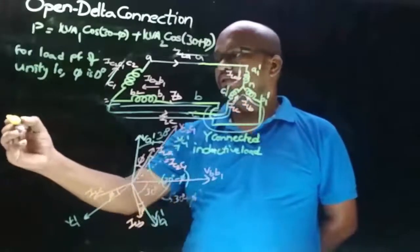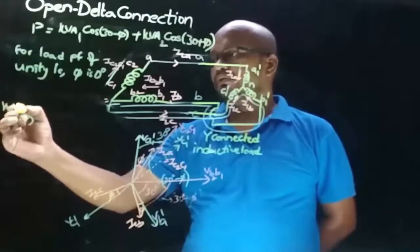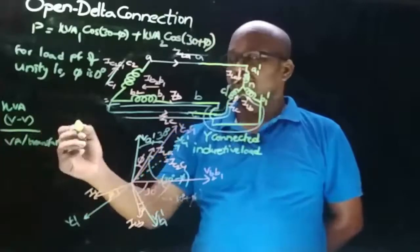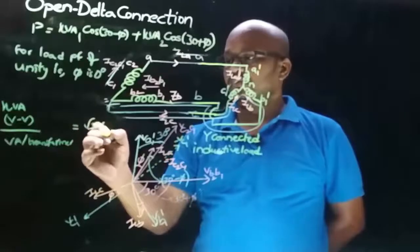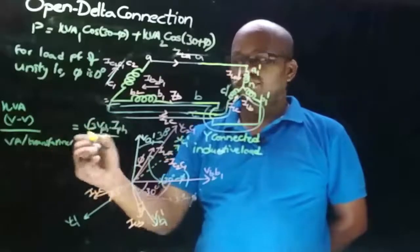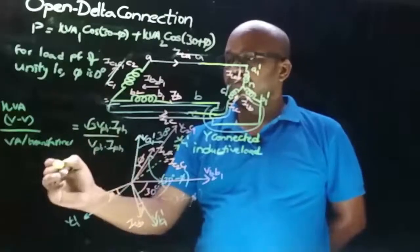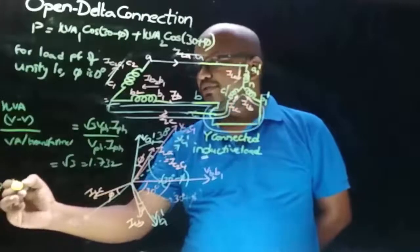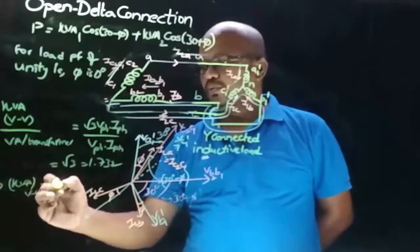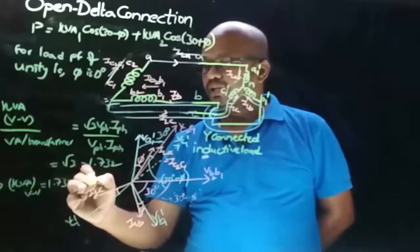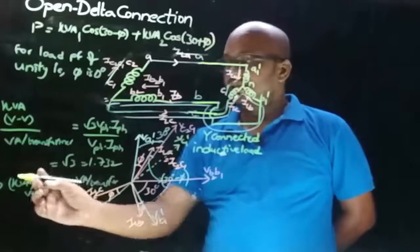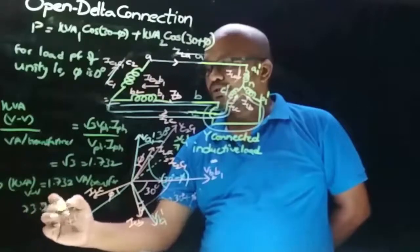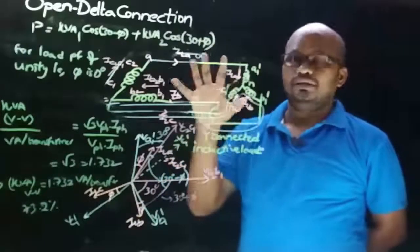Now let's find the ratio of KVA rating of open delta connection to the VA rating of each transformer. This equals root 3 times Vphase times Iphase divided by Vphase times Iphase, which gives root 3 equal to 1.732. Rearranging, KVA rating of open delta connection equals 1.732 times the VA rating of each transformer, which means in open delta connection each transformer is overloaded by 73.2%.